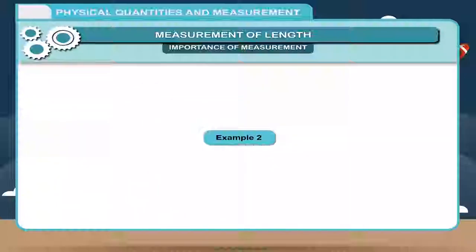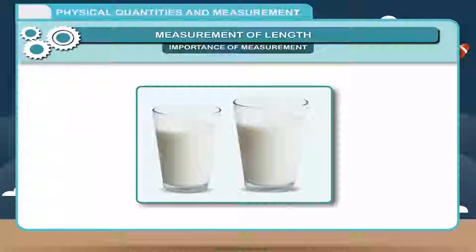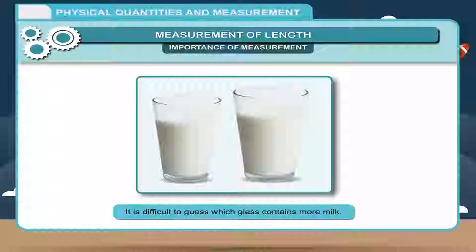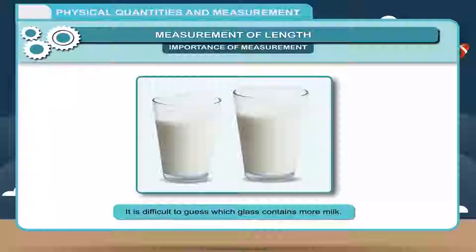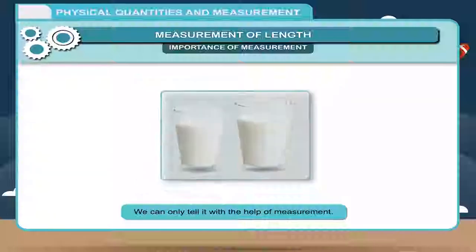Example 2: Two glasses containing milk are given. In the figure, two glasses contain milk. It is difficult to guess which glass contains more milk. We can only tell it with the help of measurement.